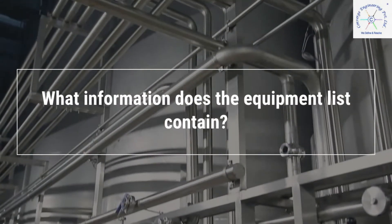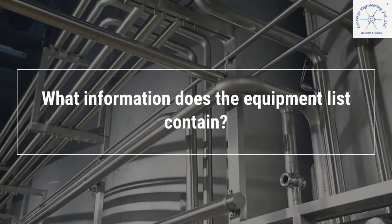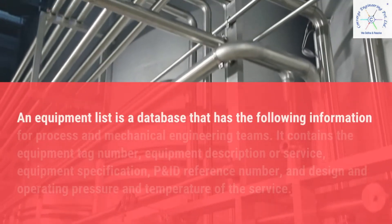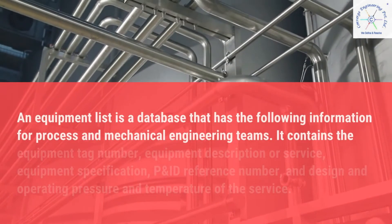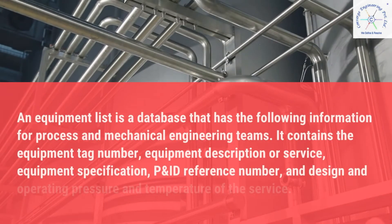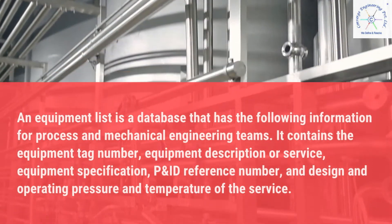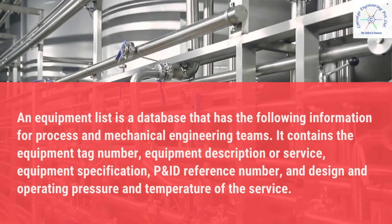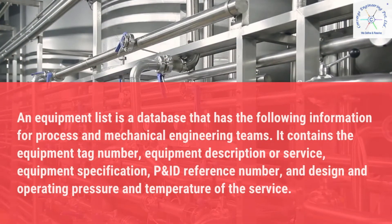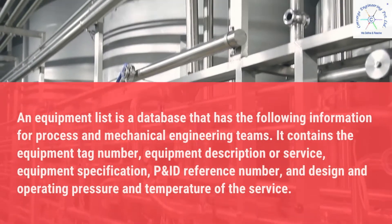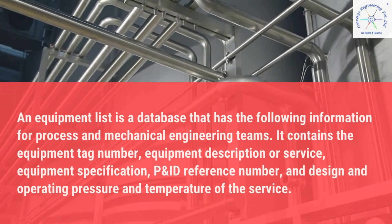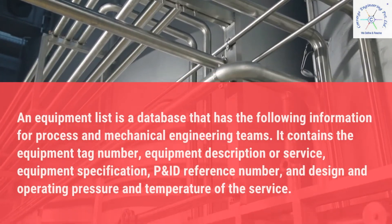What information does the equipment list contain? An equipment list is a database that has the following information for process and mechanical engineering teams: the equipment tag number, equipment description or service, equipment specification, P&ID reference number, and design and operating pressure and temperature of the service.